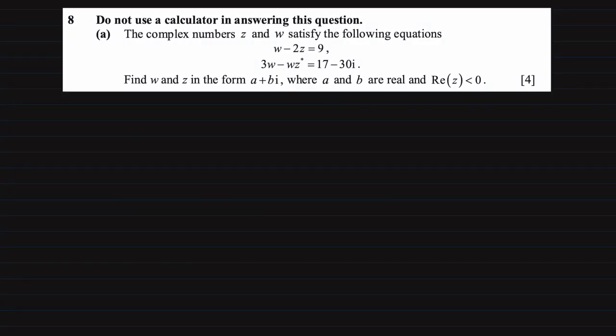So here's the question that we see. We want to find w and z in the form of a plus bi where a and b are real and the real part of z is a negative value. So this question takes the form of a simultaneous equation.